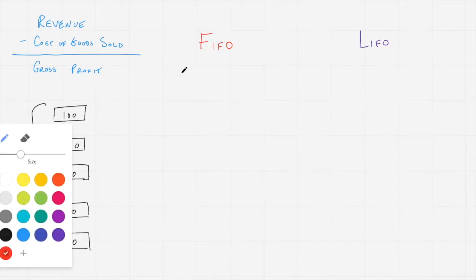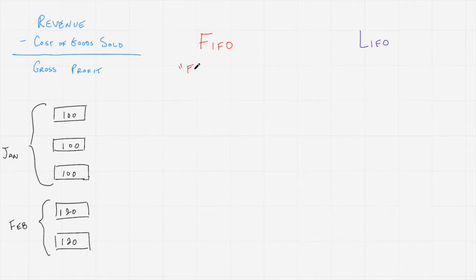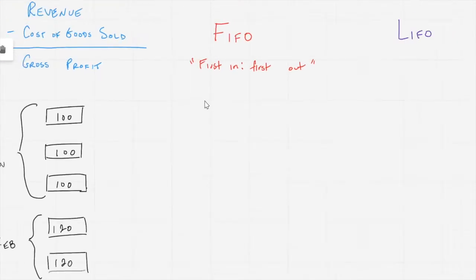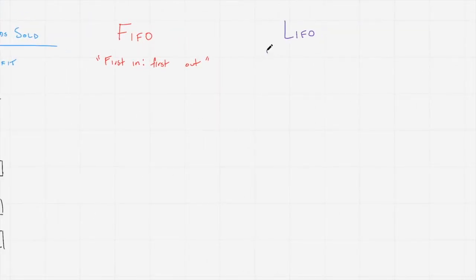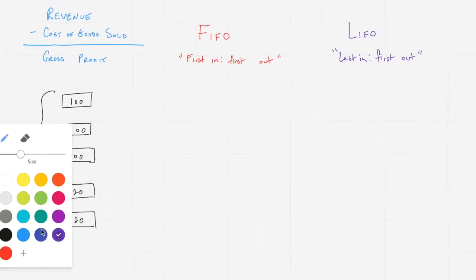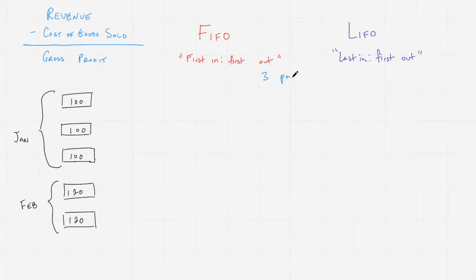Remember that FIFO is first in, first out. The first in is the first out. And the LIFO method is the last in, first out. We're going to see exactly what that means shortly. Last in is the first out. Let's assume that we're selling three pairs in either case.